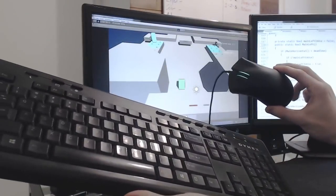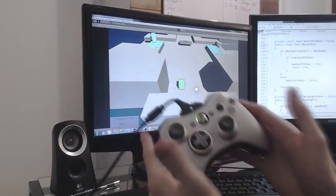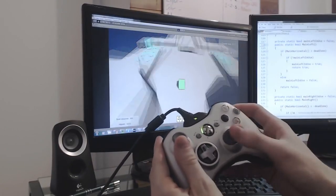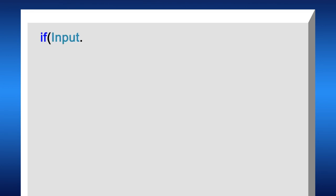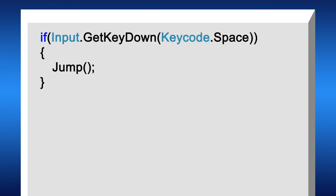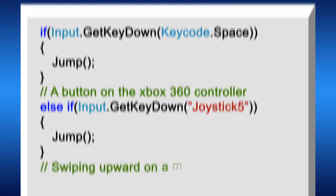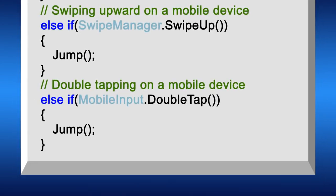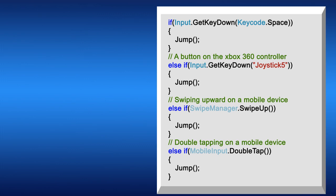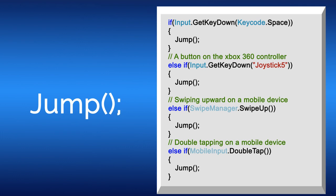Say we're making a game that supports both keyboard input and a joystick input so our player can choose which one he likes best. In order to support that, we'd have to change our code to support both the new controller and also the keyboard. And then every time a new controller would come in, we'd have to change that code again and add some new conditions. That wouldn't be much of a problem if we only had one input in our game, so maybe just a jump button.